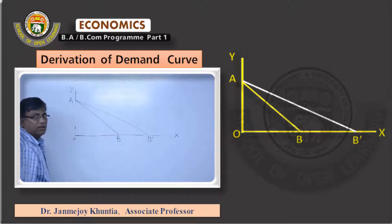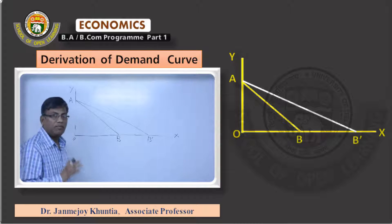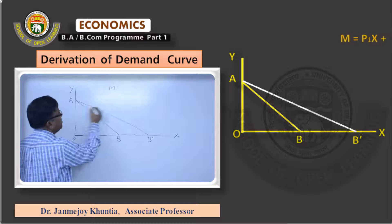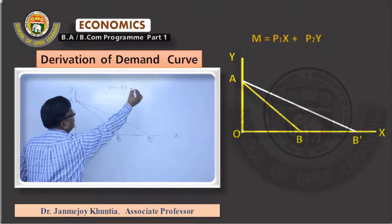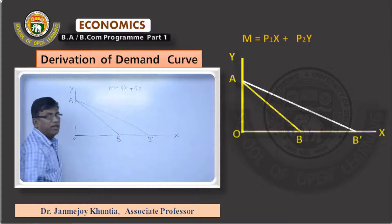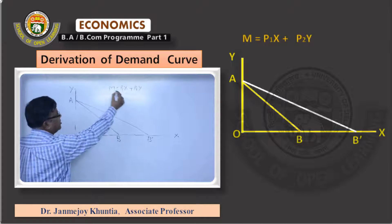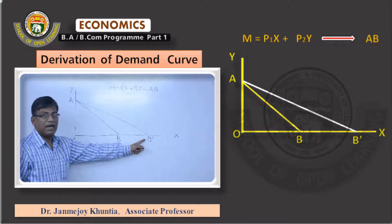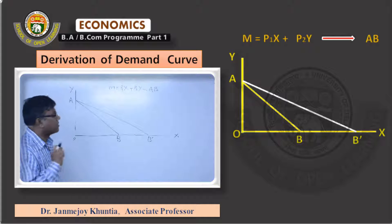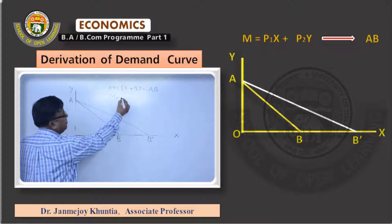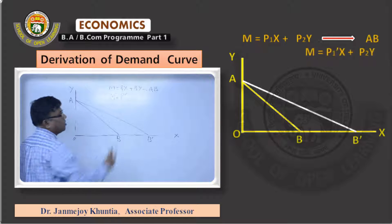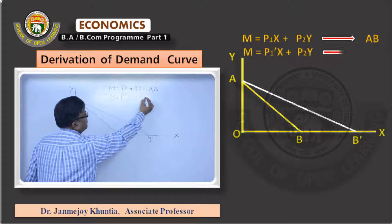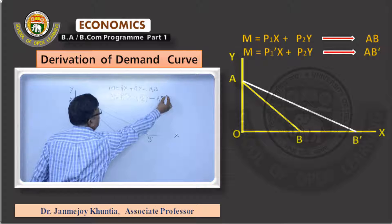On budget line AB, let us say the price of good X is P1. The initial budget line is written as P1·X + P2·Y = Income. This is budget line AB. When the budget line has moved to AB' due to falling price of X, income is the same but price of X has fallen. Let us say P1' is the new price of X, so the new budget line is AB'.